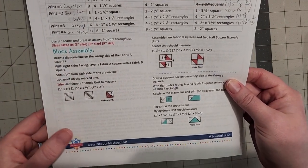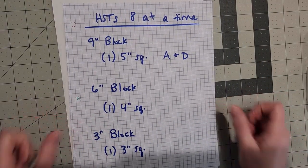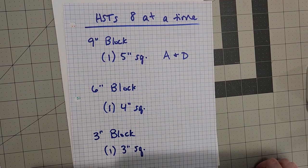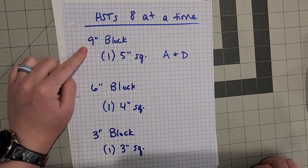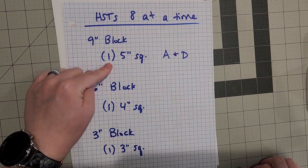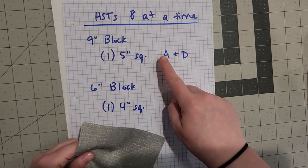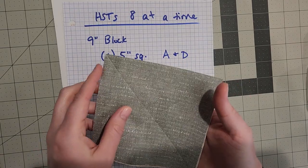I've gone ahead and written here the cutting instructions you would need to do eight at a time. I'm doing the nine inch block which means that out of the background and my print fabric all I had to do was cut one five inch square of each and that replaces pieces A and D in the pattern.